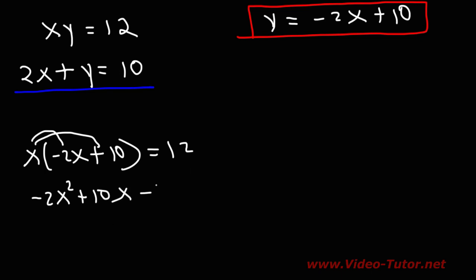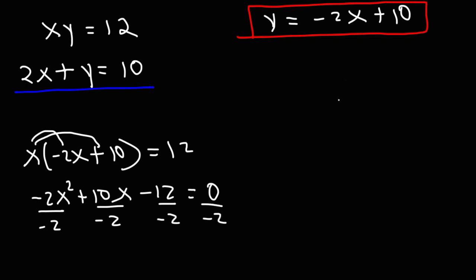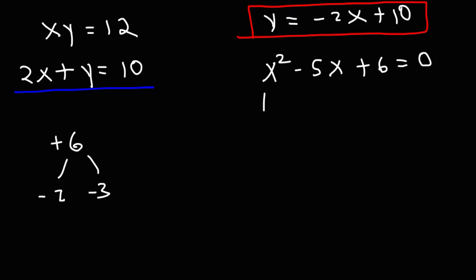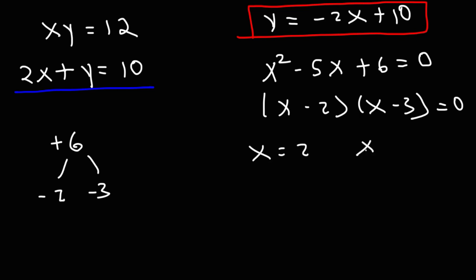Moving 12 to the other side gives negative 2x squared plus 10x minus 12 equals 0. All coefficients are even, so dividing by negative 2 gives x squared minus 5x plus 6 equals 0. Factoring: we need two numbers that multiply to 6 and add to negative 5, which is negative 2 and negative 3. So this factors as (x minus 2)(x minus 3), giving x equals 2 and x equals 3.